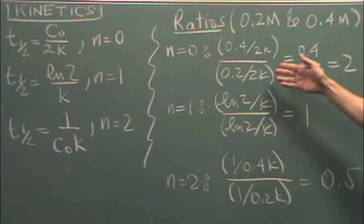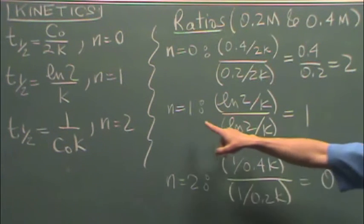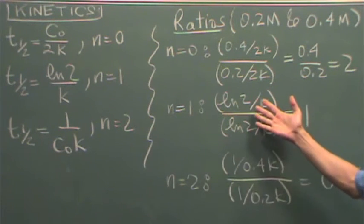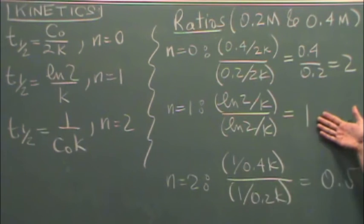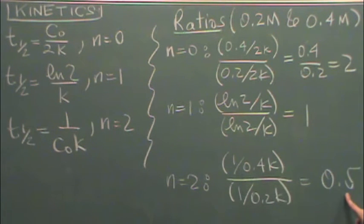Plug that in, you'll notice that everything drops out and you get a ratio of two. If you do the same thing for the first order half-life, there's no concentration involved at all. Everything cancels and you get a one. If you do that for the second order half-life, you put in your concentrations, you get a half.